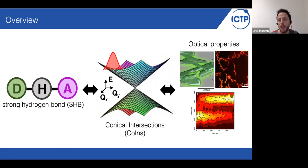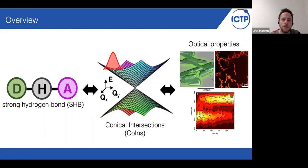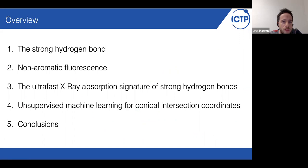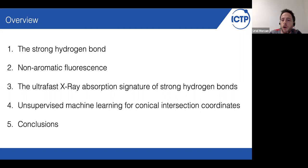I will talk about two very specific systems. So this is more or less the overview of the talk. I will start by introducing the strong electron bonds, then I will talk about non-aromatic fluorescence, after that I will speak about X-ray absorption spectroscopy and how it can capture the signature associated with strong electron bonds, and finally I will show a very simple unsupervised machine learning method for studying the coordinates associated with conical intersections.